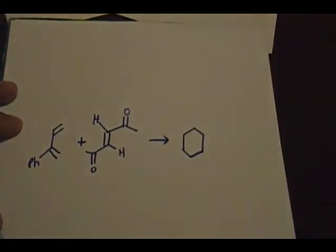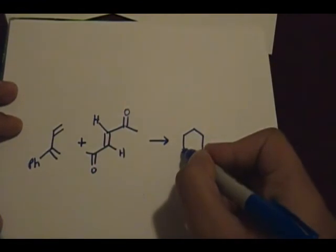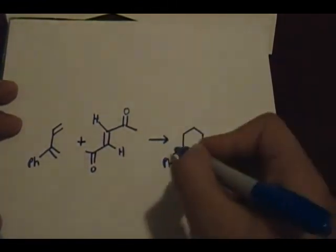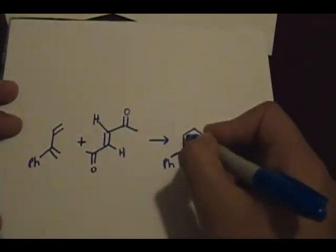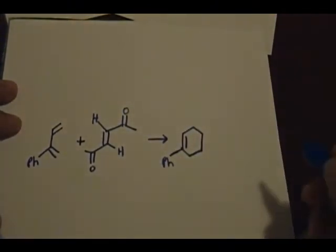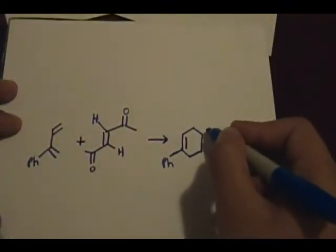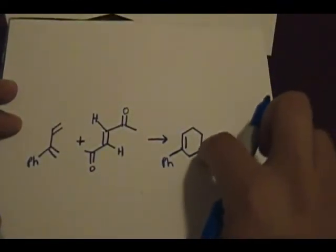Only when you have a cyclic diene does it form this. So now this reacts, right, it forms the six-member ring. You have your phenyl group right there, your phenyl group, you have your double bond there.